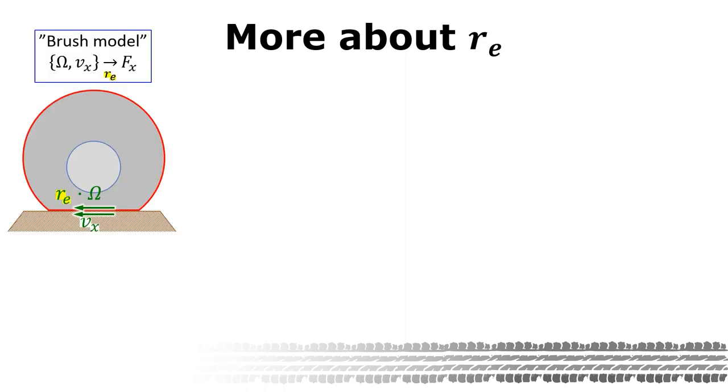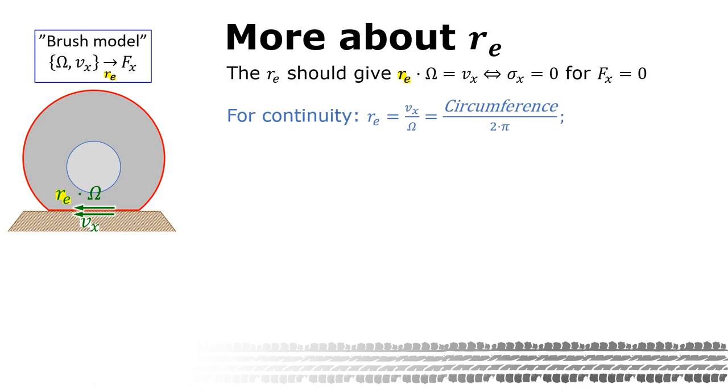Let us try to understand the effective rolling radius. This was the sketch from previous slides. In the context of the brush model, we would like to have zero force fx at the same time as we have zero slip sigma x. So that is the definition, in words, of the effective rolling radius. One reasonable assumption is that the belt is rigid in circumferential direction. Assuming also continuity over several revolutions, that yields that re has to be the circumferential length divided by 2 pi. With this definition of re, the brush model will give us the desired zero force for zero slip.